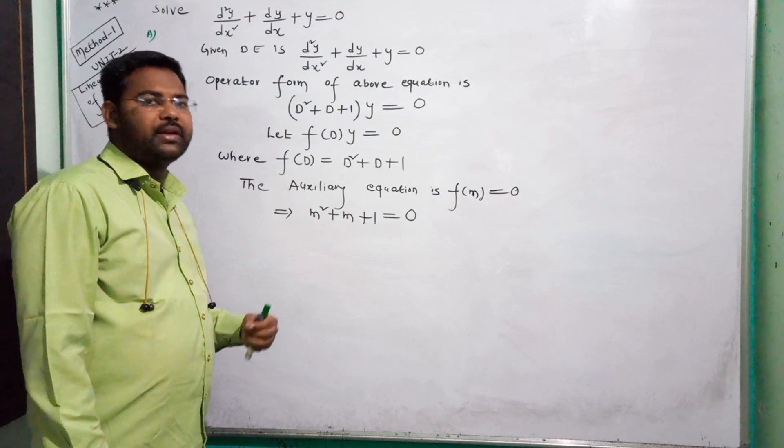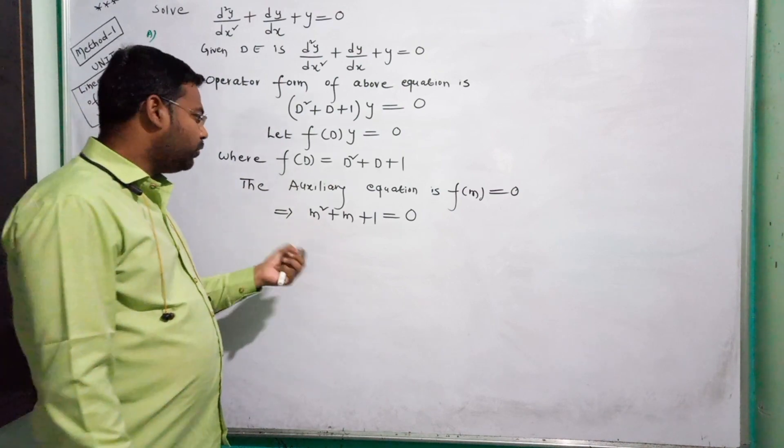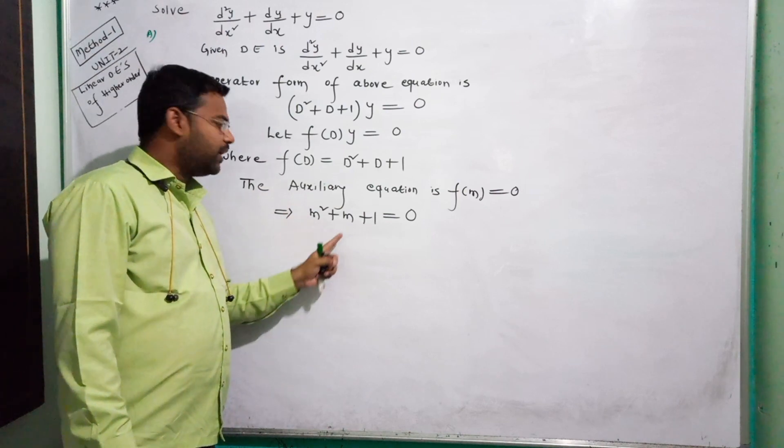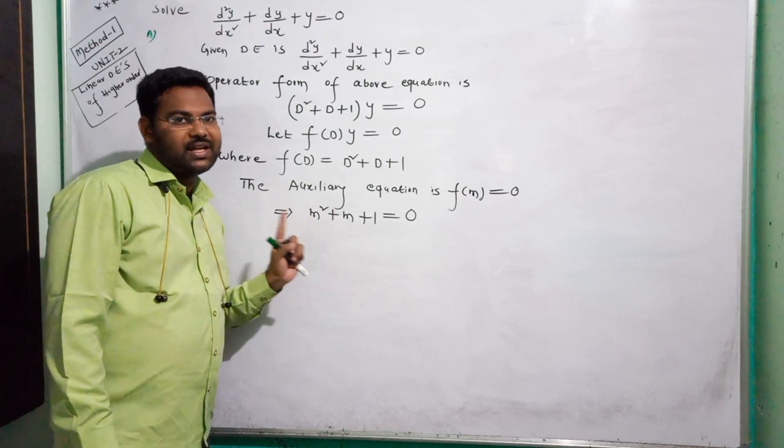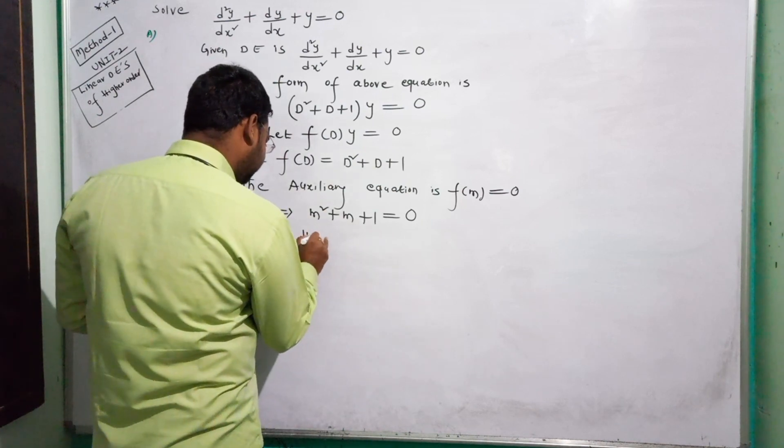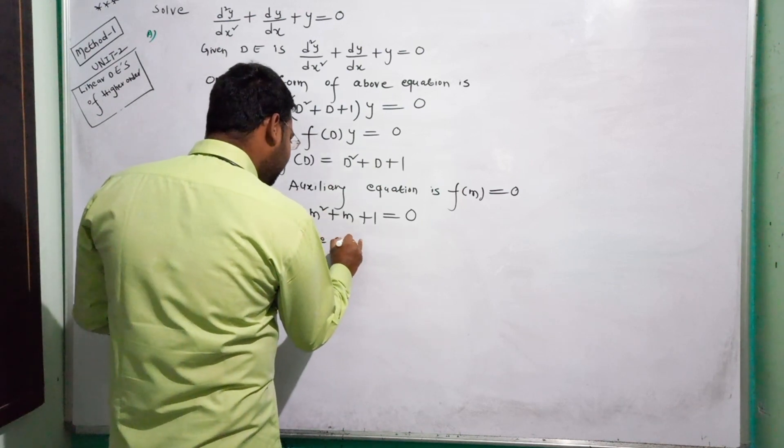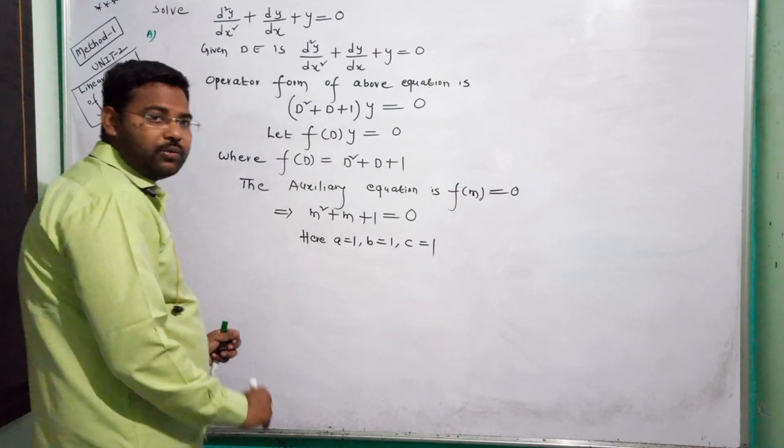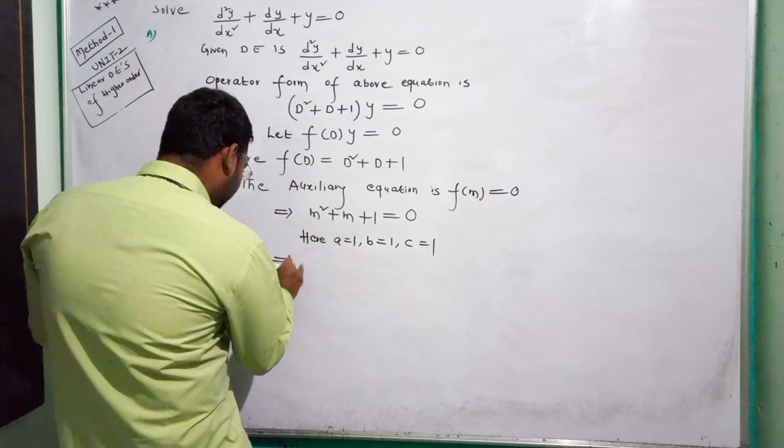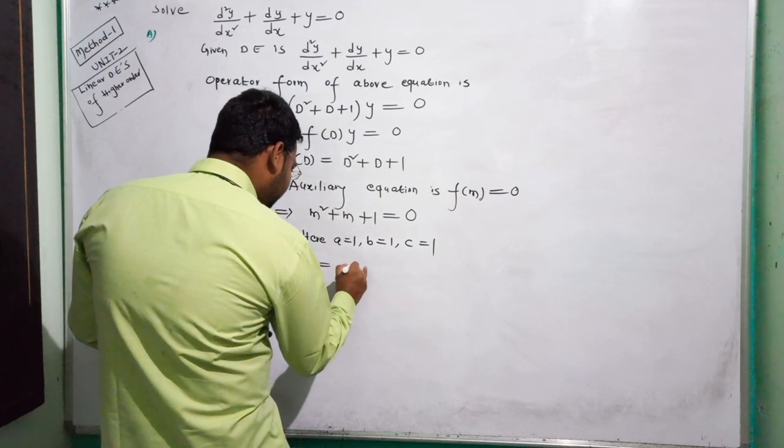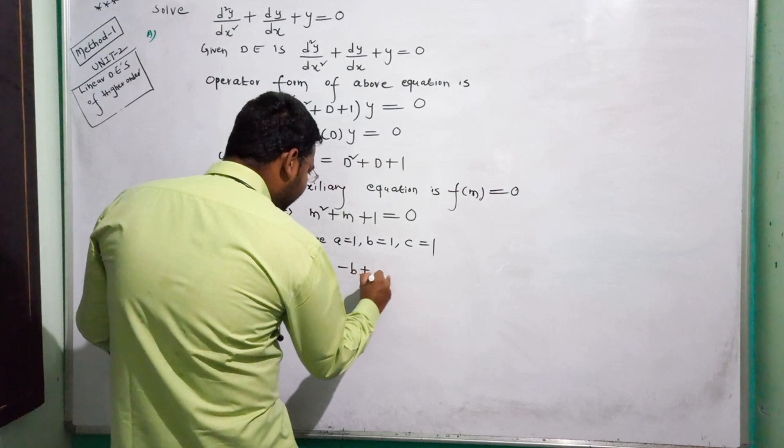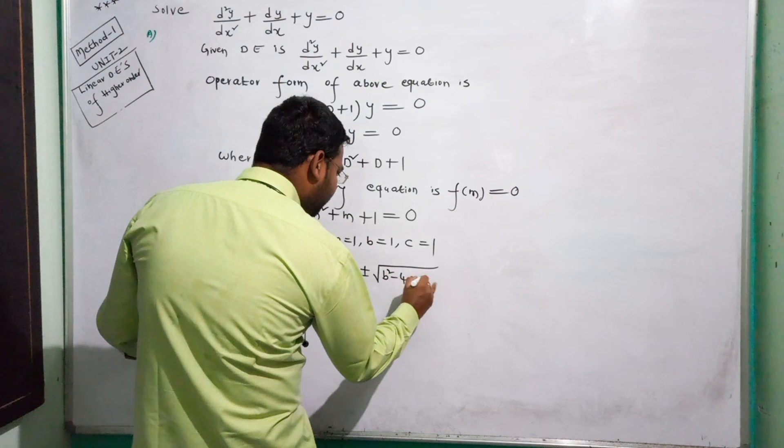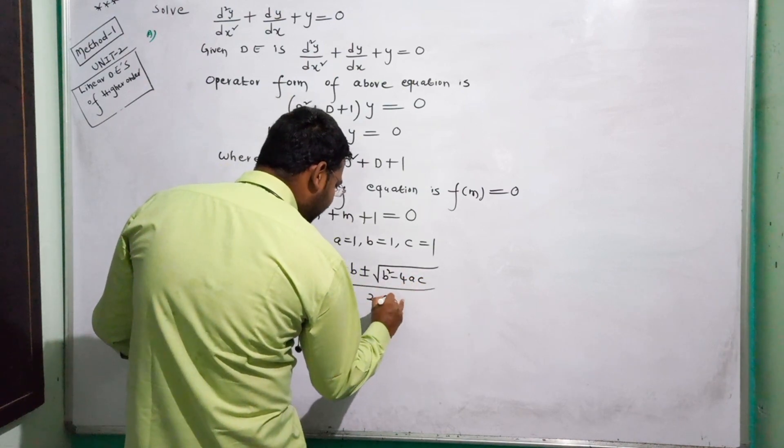Roots using quadratic formula: M equals minus B plus or minus square root of B squared minus 4AC, divided by 2A. Here A equals 1, B equals 1, C equals 1.